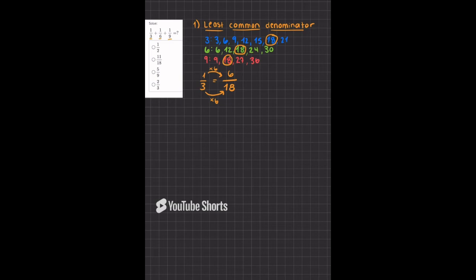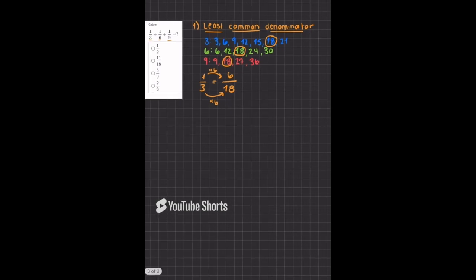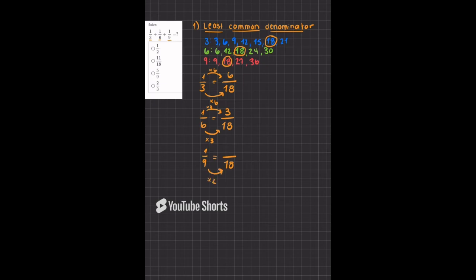If I do the same for 1/6, I know that I have to have a fraction with a denominator of 18. I multiplied by 3, and that means I'll also have to multiply the numerator by 3. We'll do that for the last fraction as well, 1/9. I know it has to have a denominator of 18. I multiplied by 2, and that means I'll have to multiply the numerator by 2, giving me 2/18.